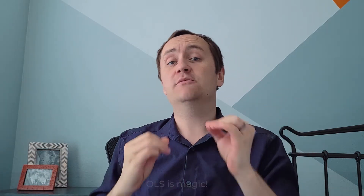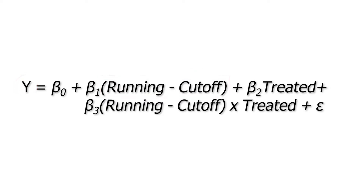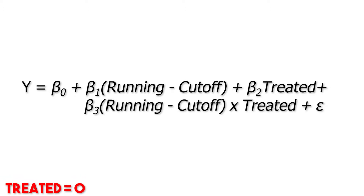We can use a linear regression model that looks like this. We are regressing our outcome y on the running variable minus the cutoff. We also have an indicator for being treated — being on the correct side of the cutoff — as a binary variable. And then we have the interaction between the running variable minus the cutoff and being treated. Effectively, we are estimating two lines: one linear regression to the left of the cutoff and a different linear regression to the right.